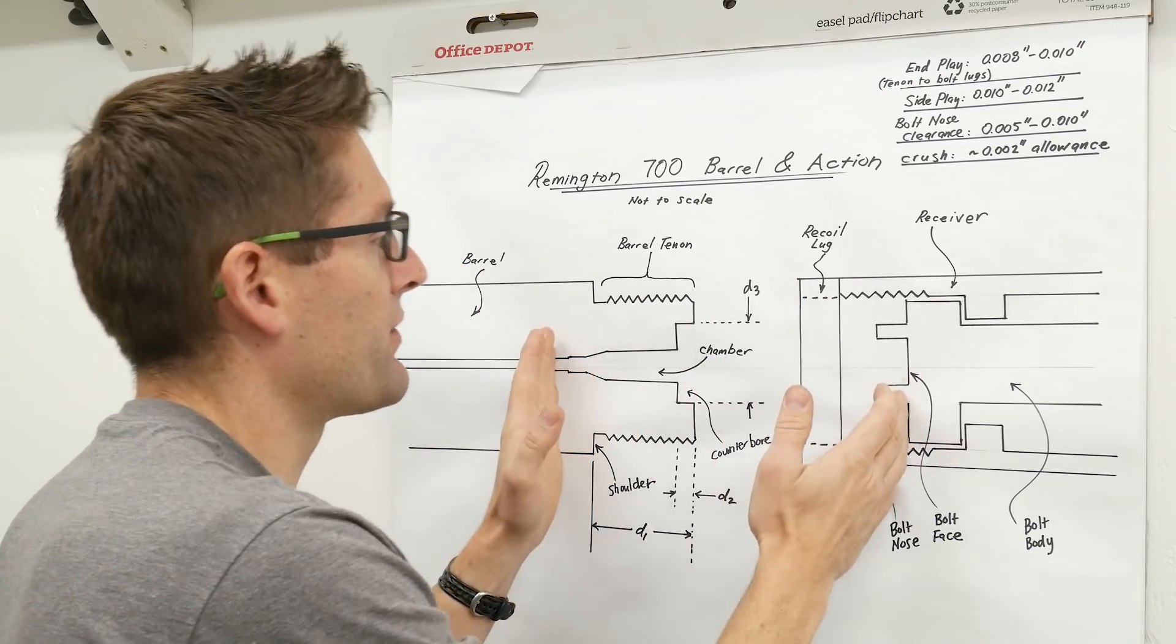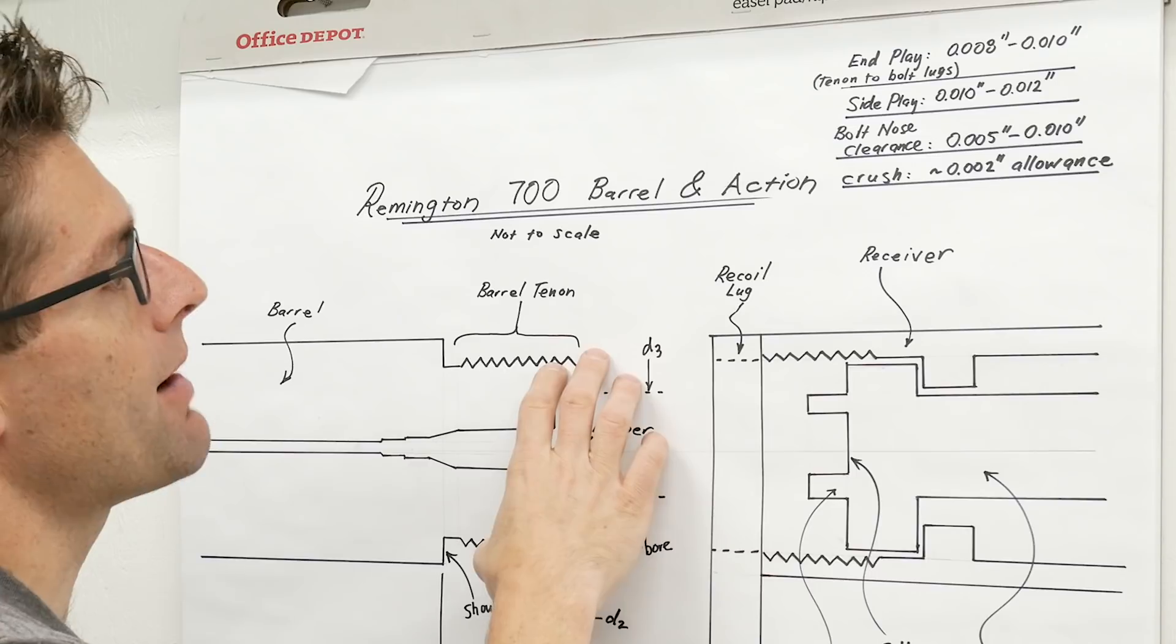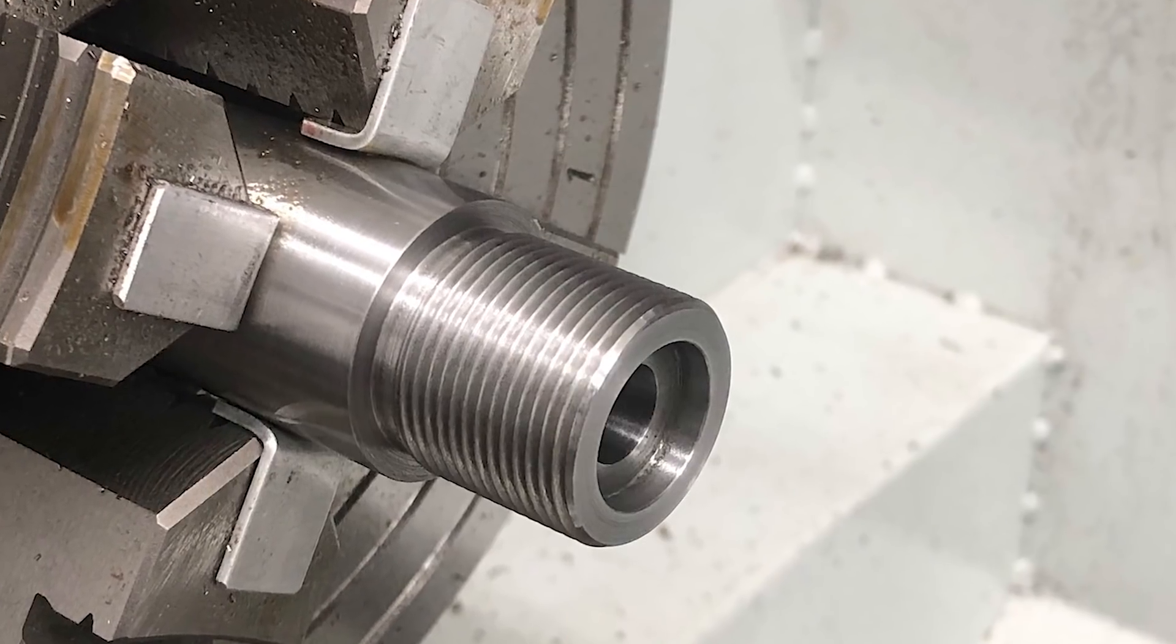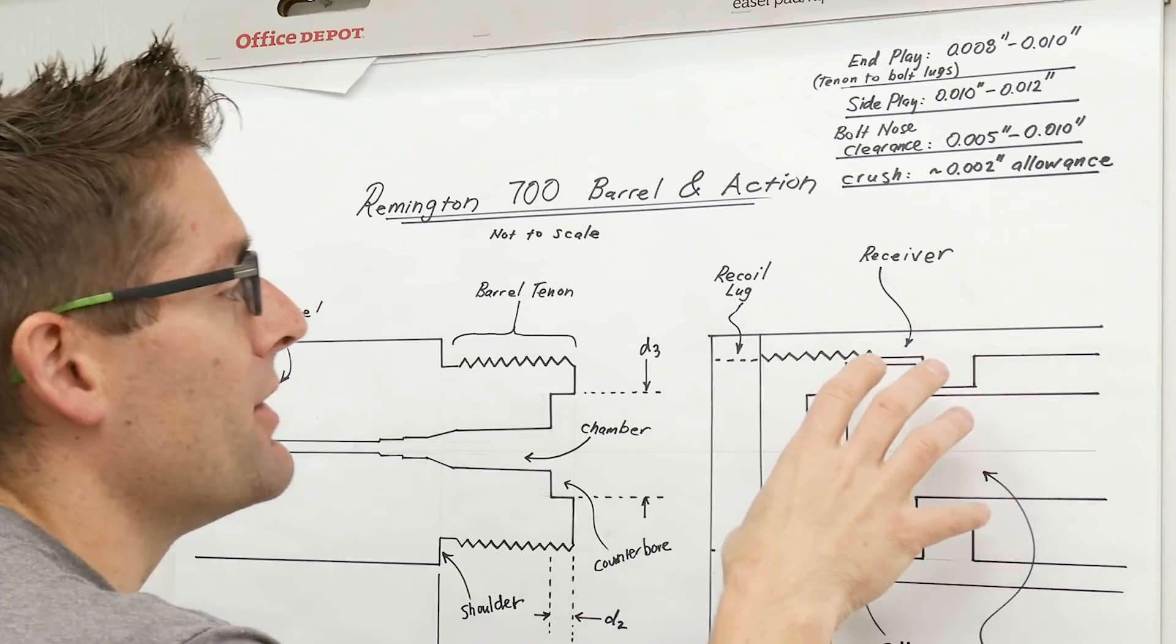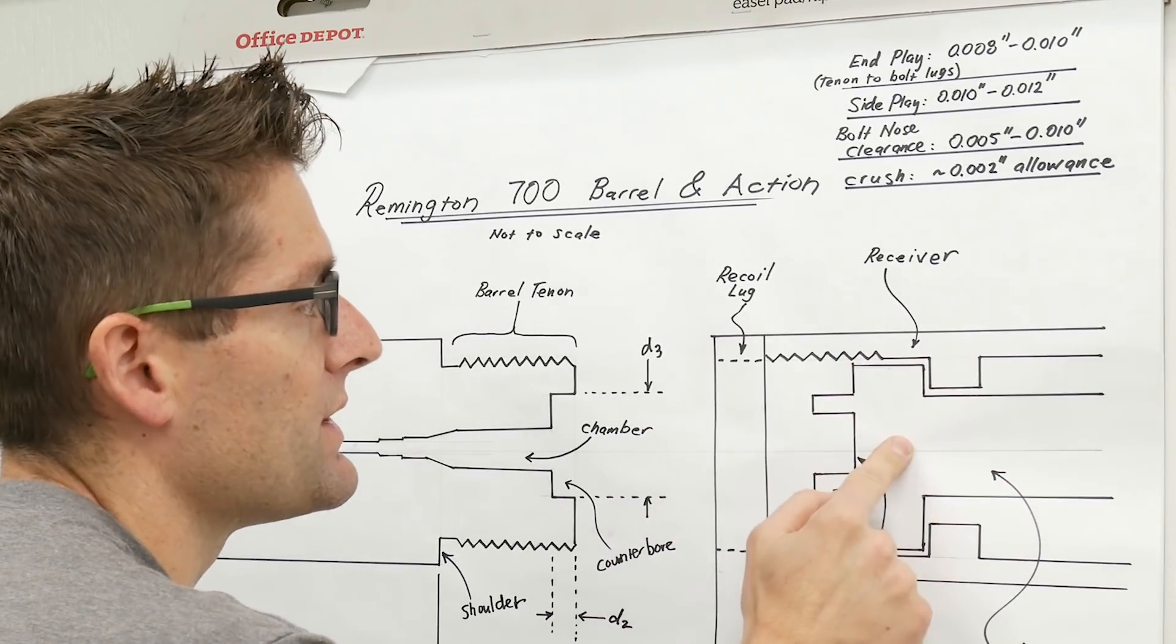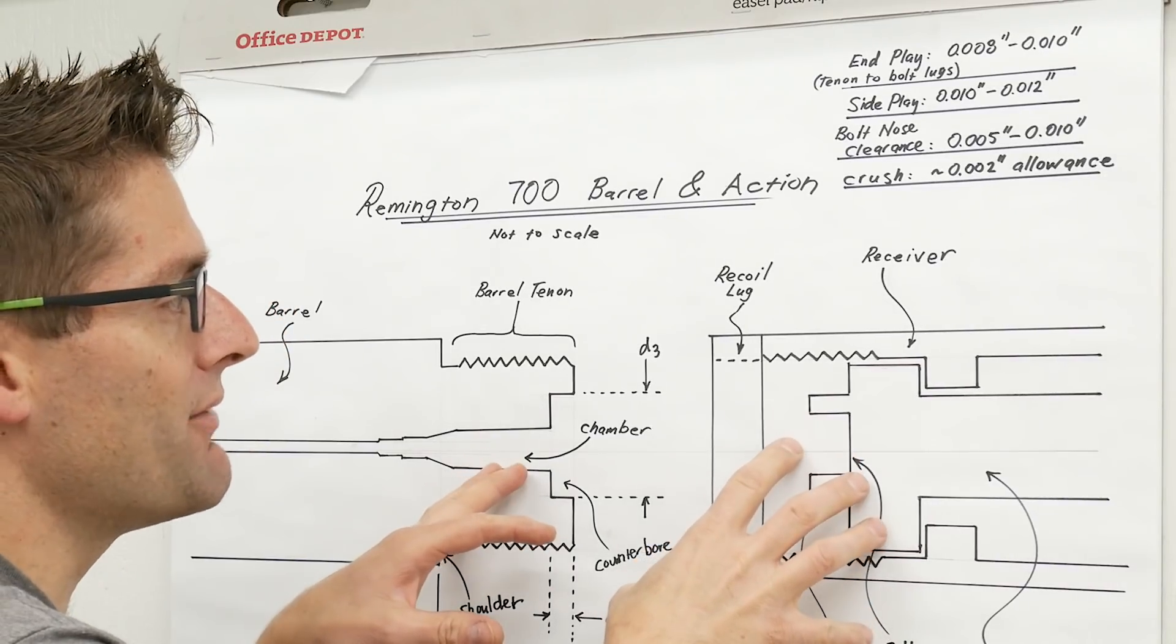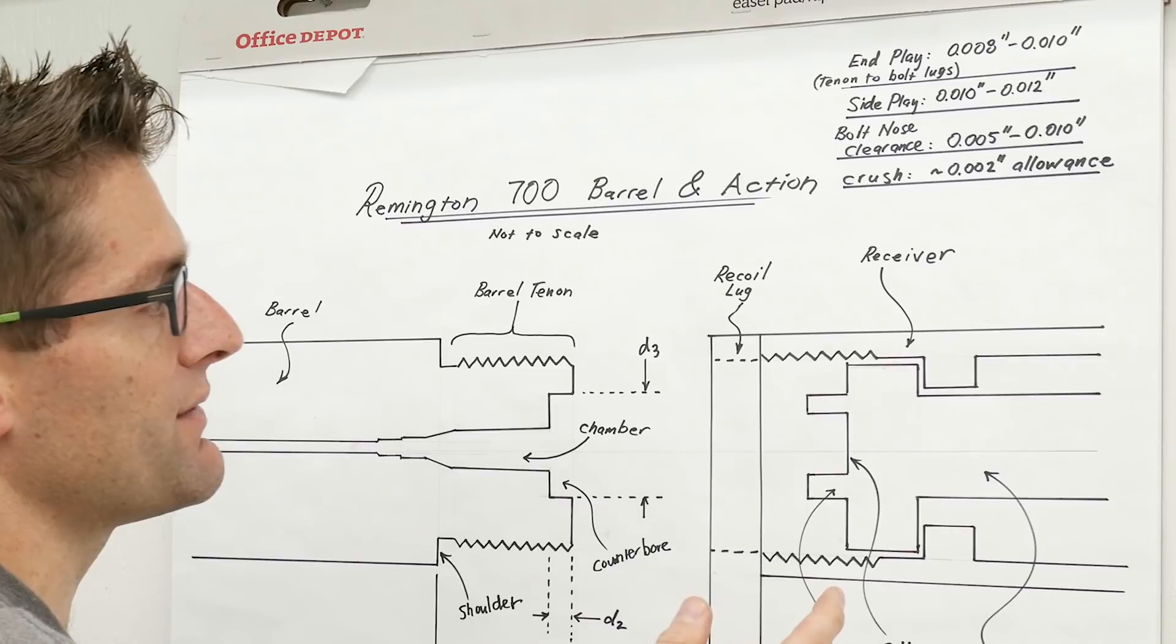So let's walk through the components. We've got the barrel here, and this shows the barrel after the machining operations we're going to perform as a part of the chambering process. And then for a Remington 700 we've got a recoil lug that's separate, the receiver and the bolt. Now I'll note that for the Remington 700 it's kind of a cool design because they've got the three rings of steel, right?